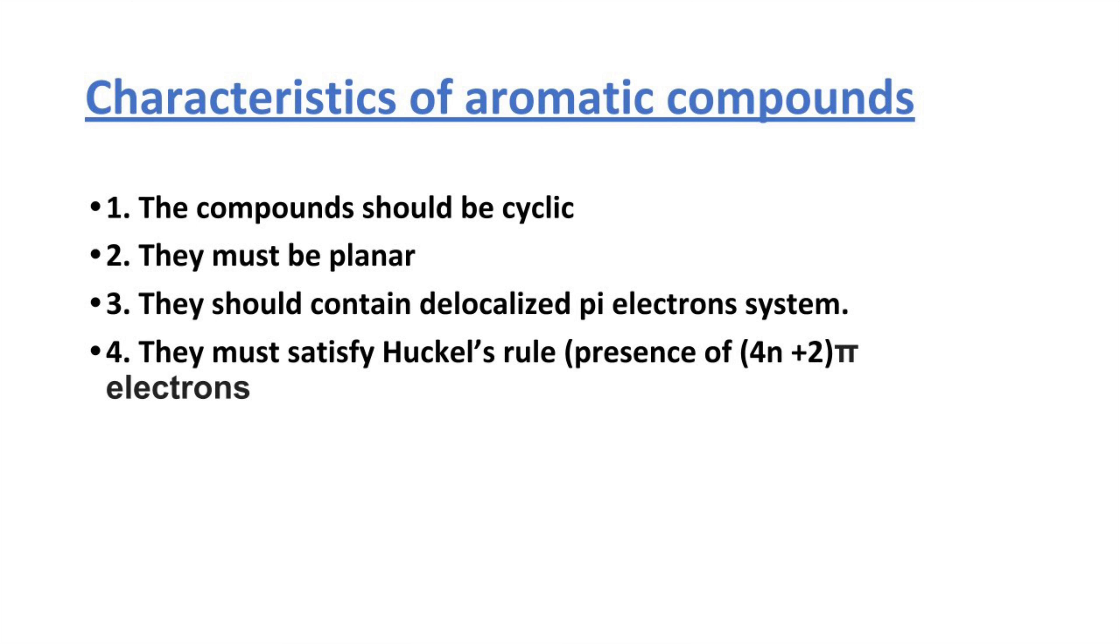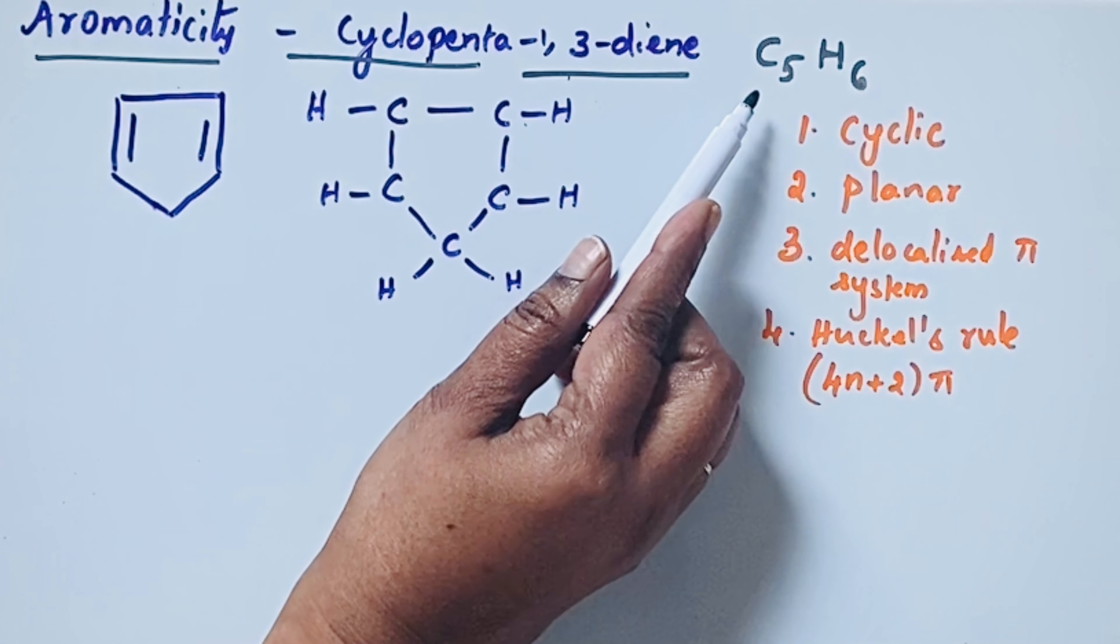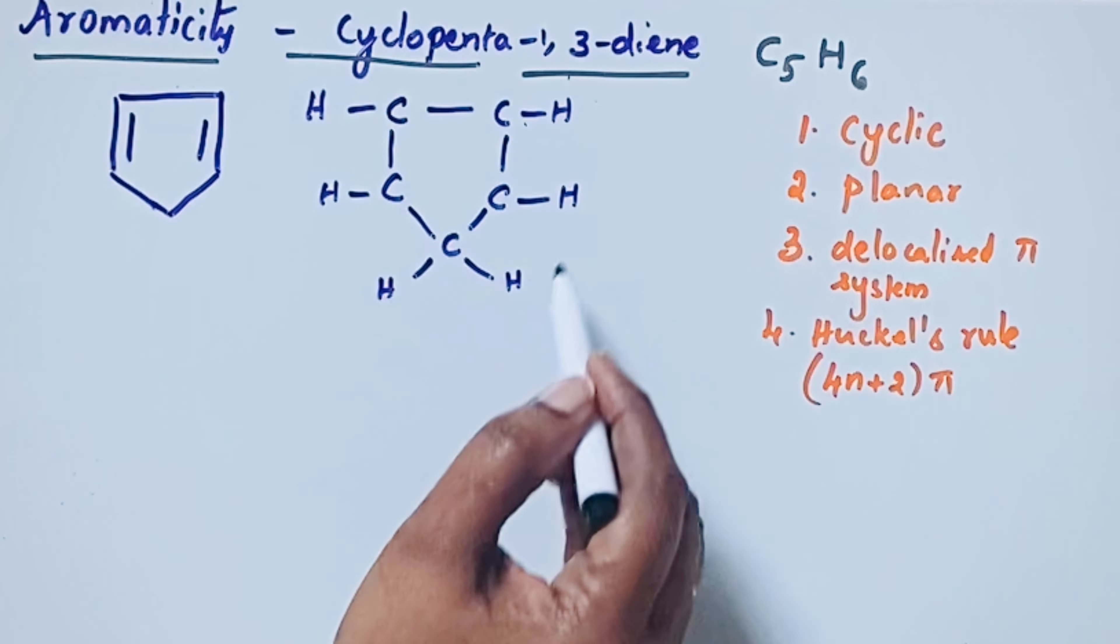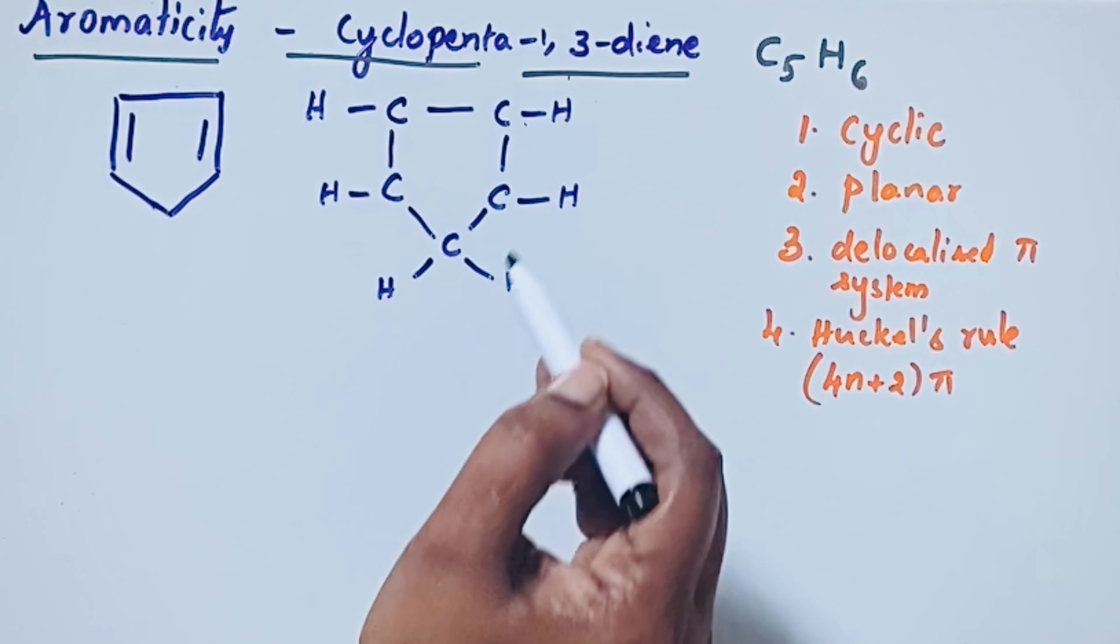So for cyclopenta-1,3-diene, formula C5H6, this is the complete structure of cyclopenta-1,3-diene.